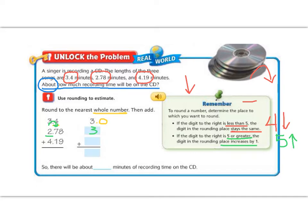Because I'm rounding up the 2 to the next biggest number. Our last number is 4.19. I underline the digit and look next door. Next door, I have a 1. 1 is smaller than 4, so I'm going to stay the same. So 4 stays the same. Then it says that we are going to add. So 3 plus 3 plus 4 is 10. So there will be about 10 minutes of recording time on the CD.